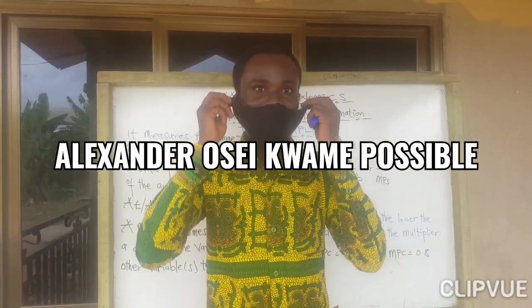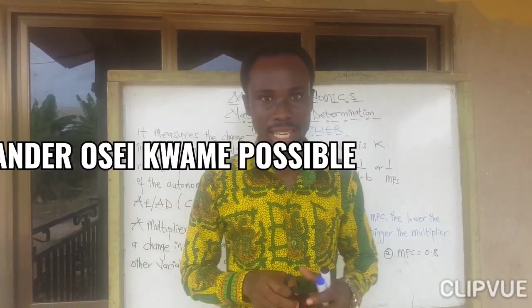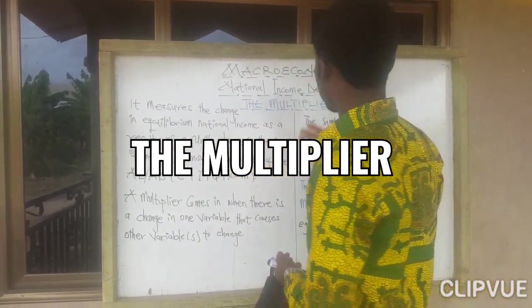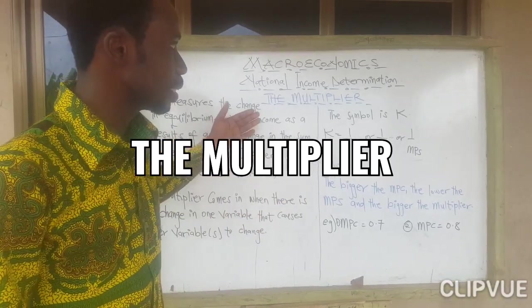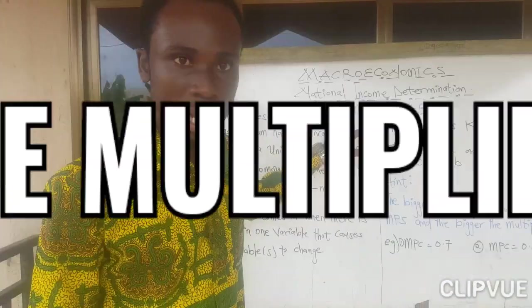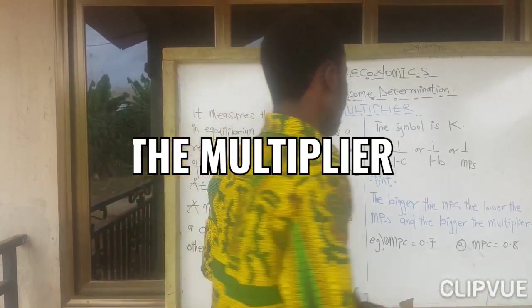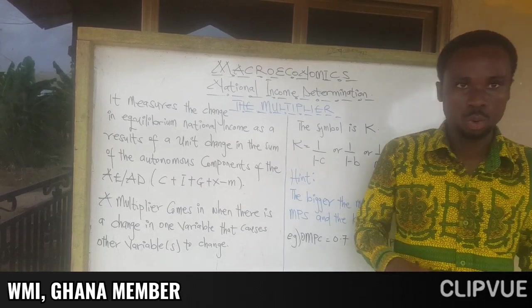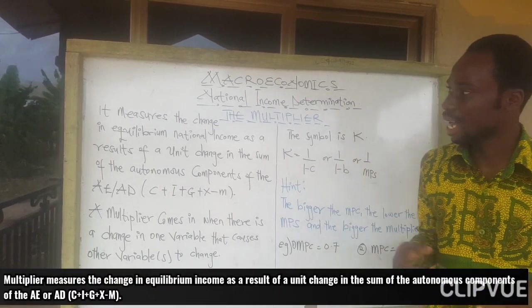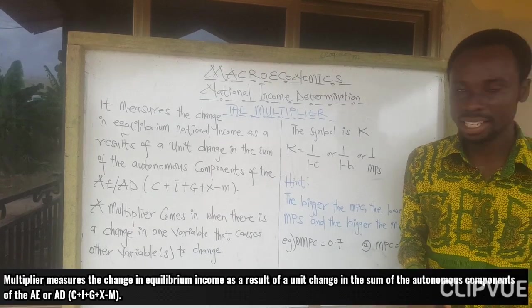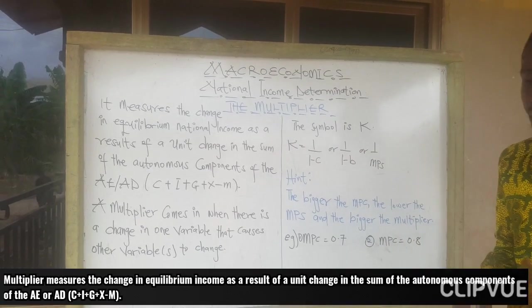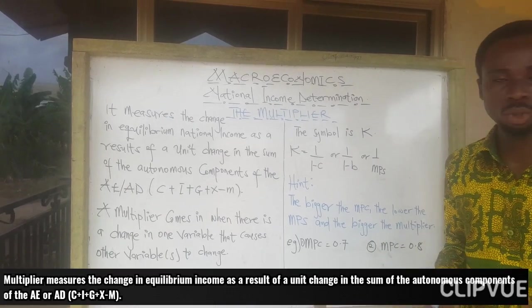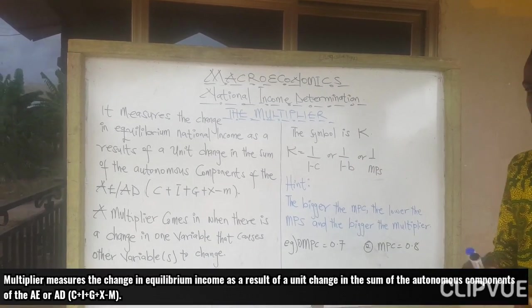My name is Alexander Osei from Ghana. Today we are going to continue with our lesson on national income determination — the multiplier. The multiplier is an instrument or tool that is used to measure the change that occurs in the national income or aggregate expenditure when the autonomous component also changes.